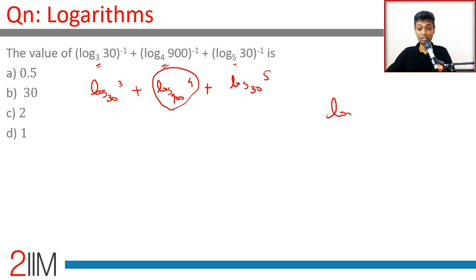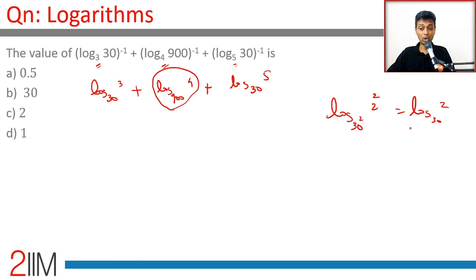This is log of 2 squared to the base 30 squared, which is nothing but log 2 to the base 30. Because 900 is 30 squared, 2 squared to the base 30 squared is nothing but log 2 to the base 30.